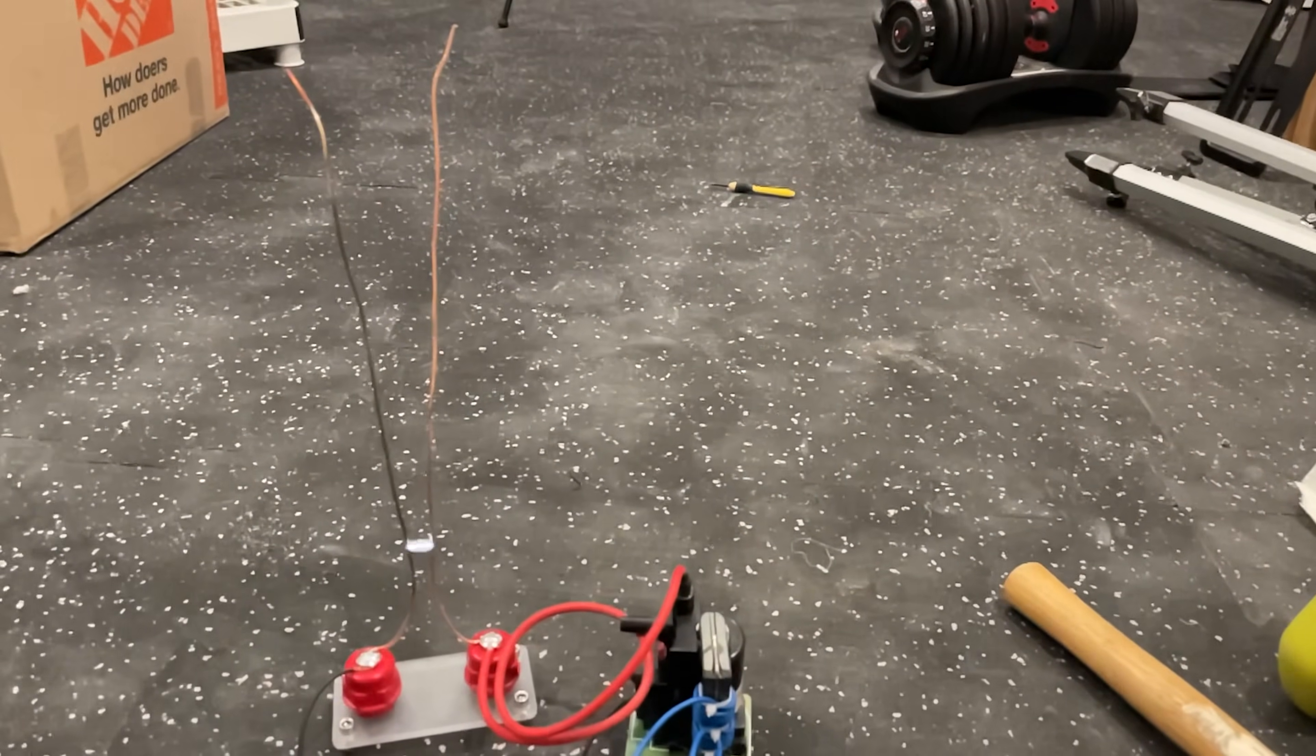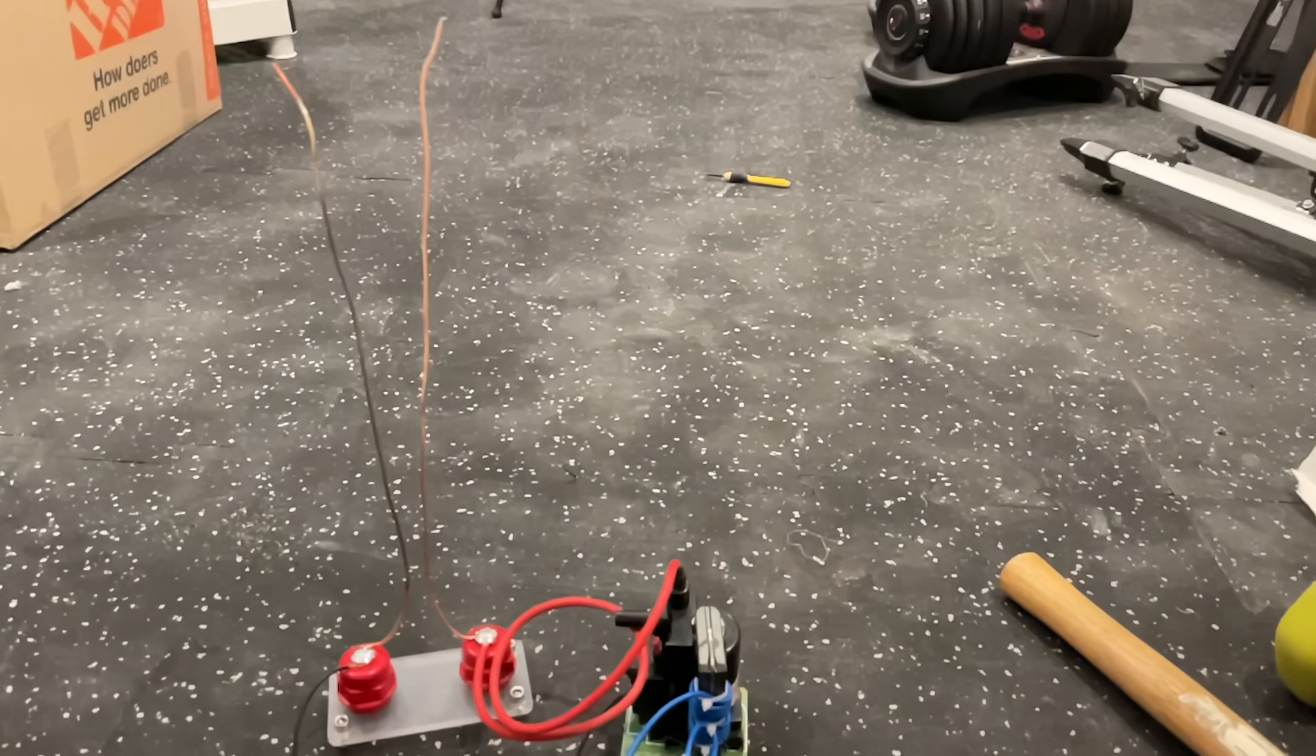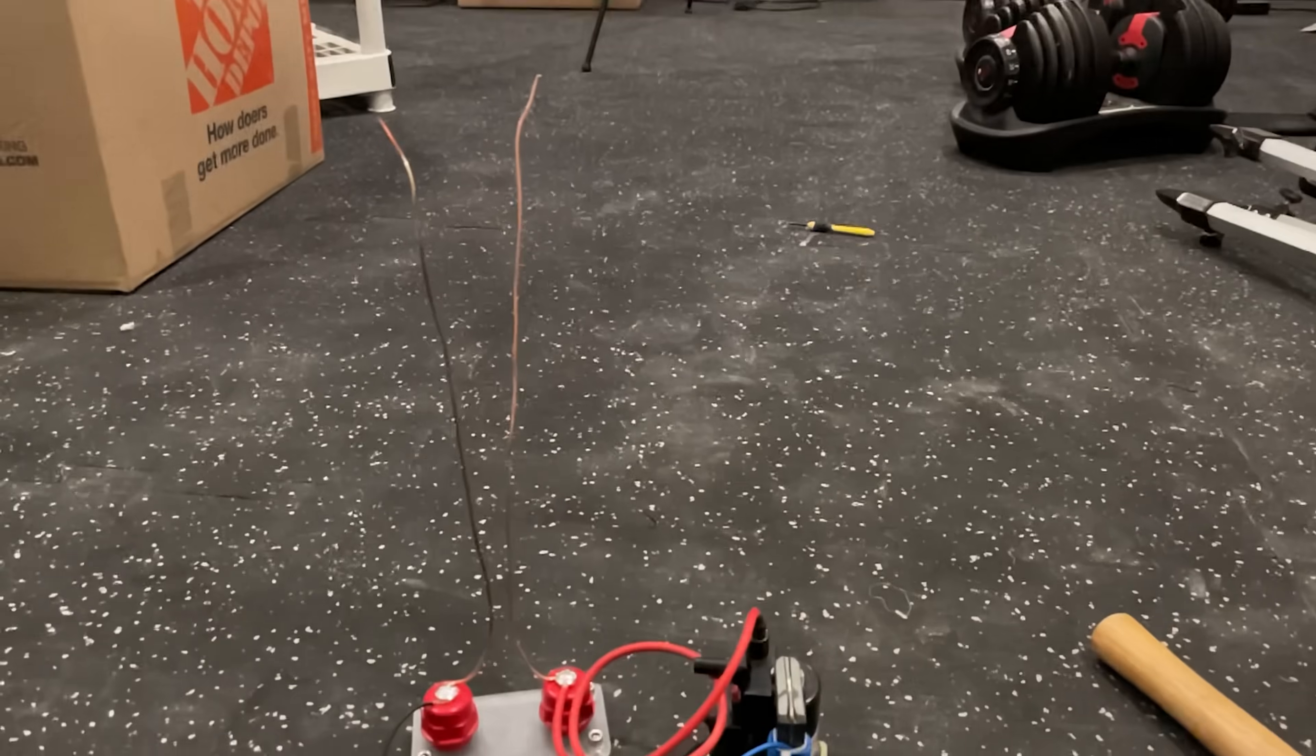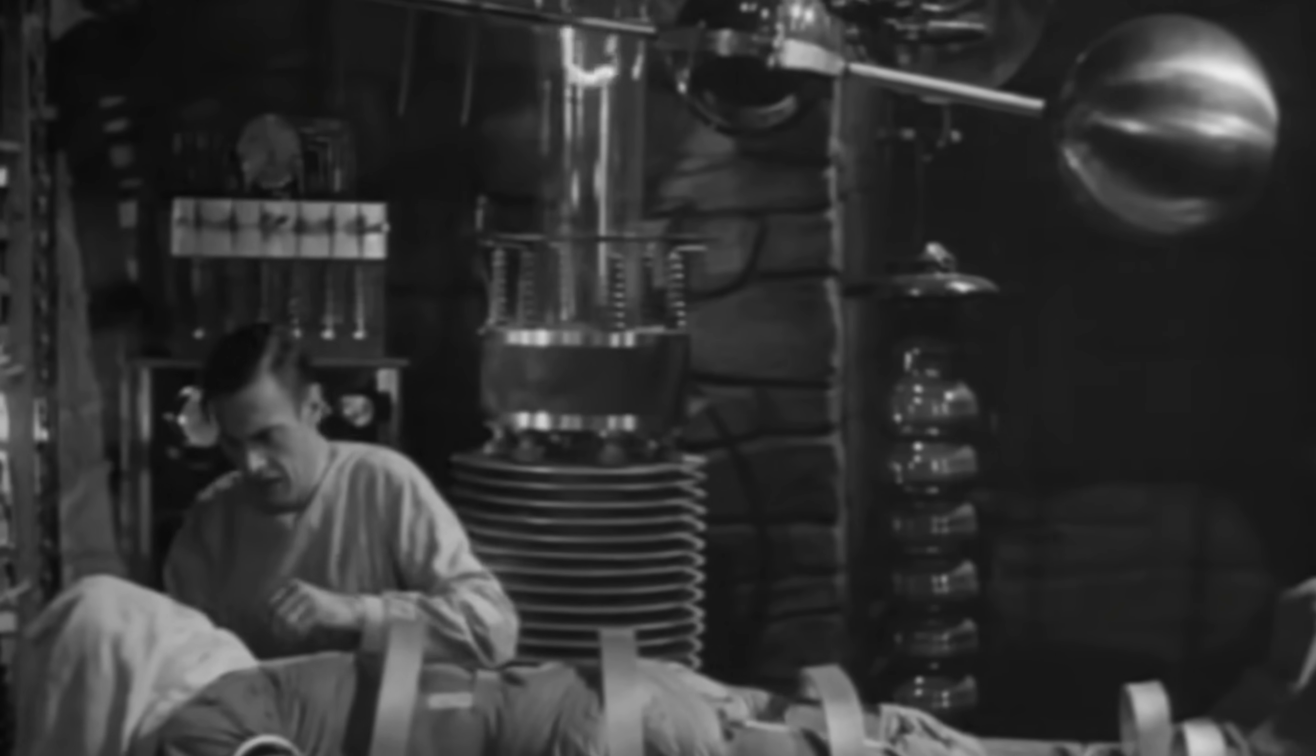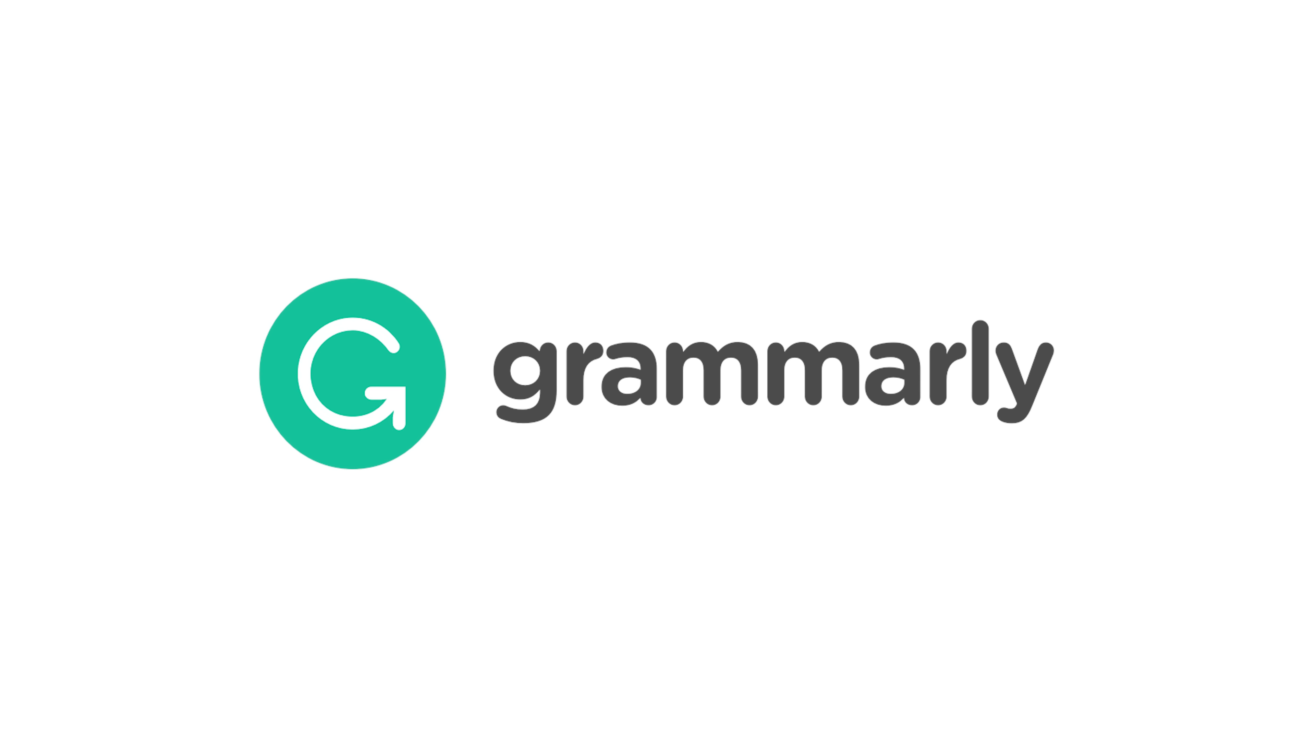This is called Jacob's Ladder, or the climbing arc. It was made famous by the original Frankenstein movie in 1931, showing at least five Jacob's Ladders. And thanks to Grammarly for sponsoring this video.